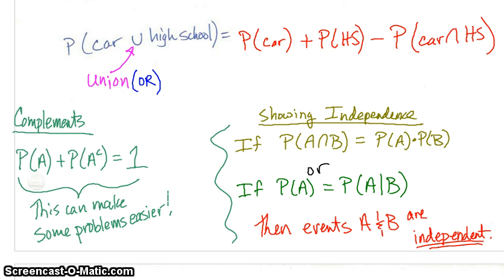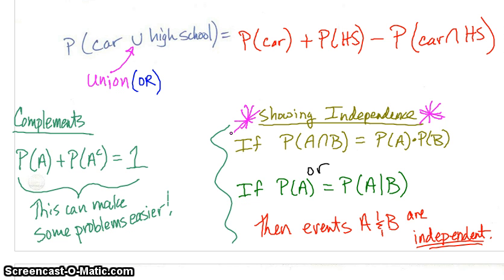Big importance here: showing independence. There are two ways. If the probability of A intersect B equals the probability of A times the probability of B, then events A and B are independent. Or, if you prefer conditional probabilities, show that if the probability of A equals the probability of A given B, then events A and B are independent. If this is not true, then events A and B are not independent.